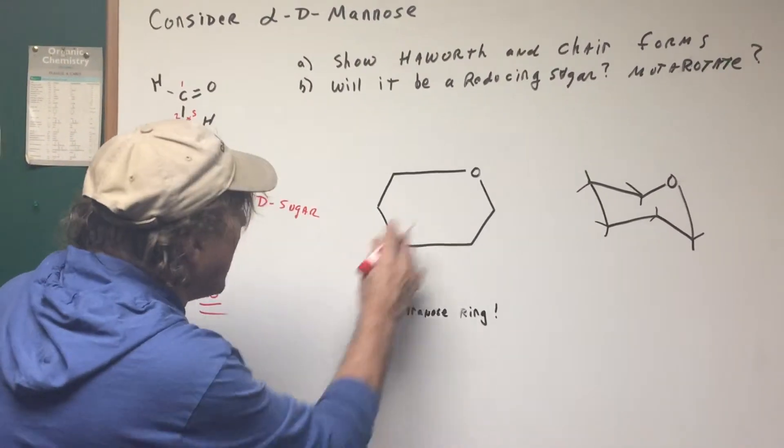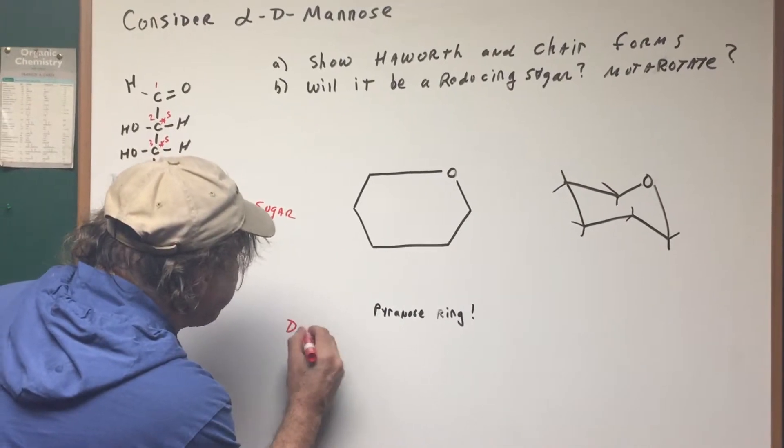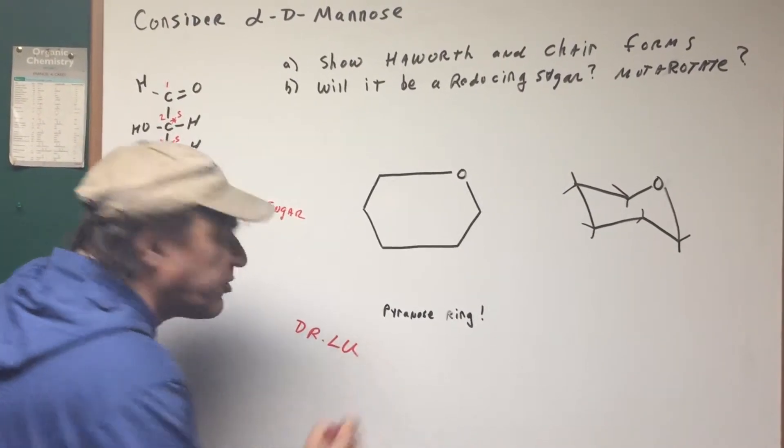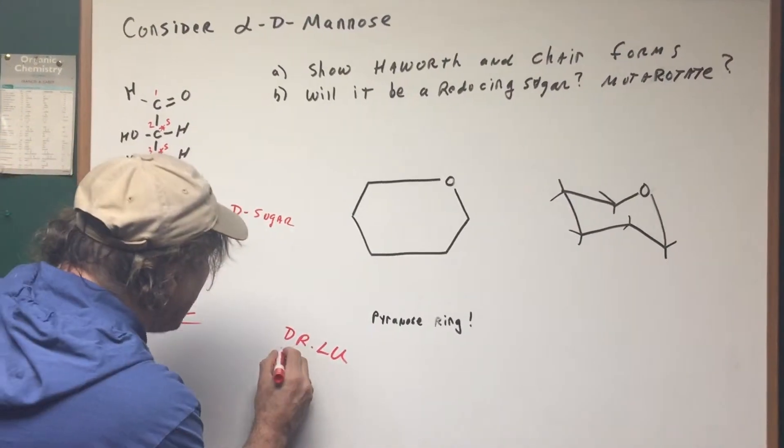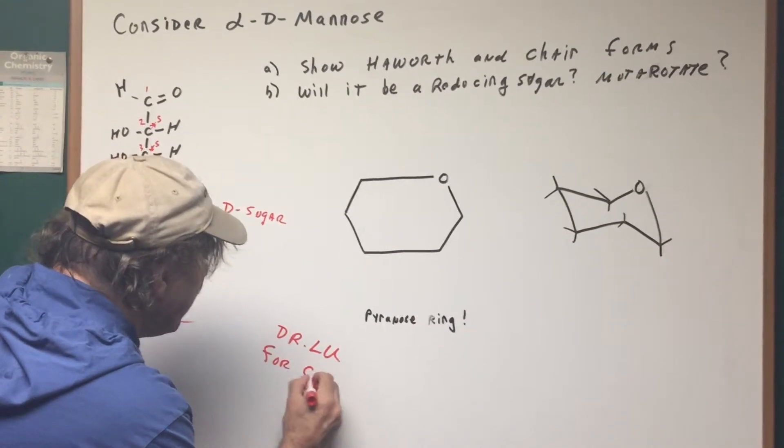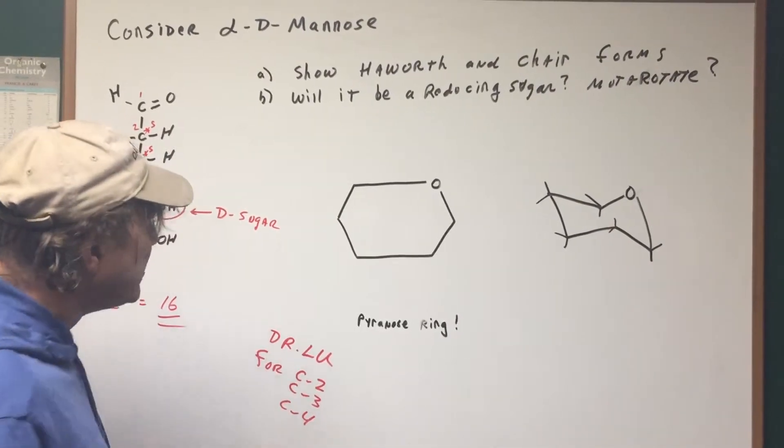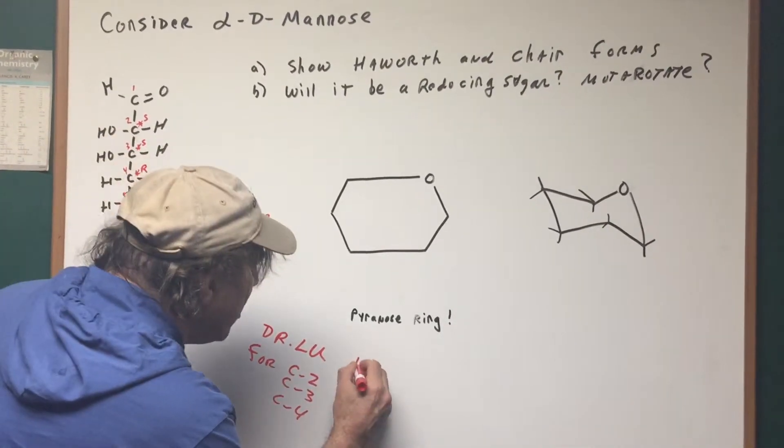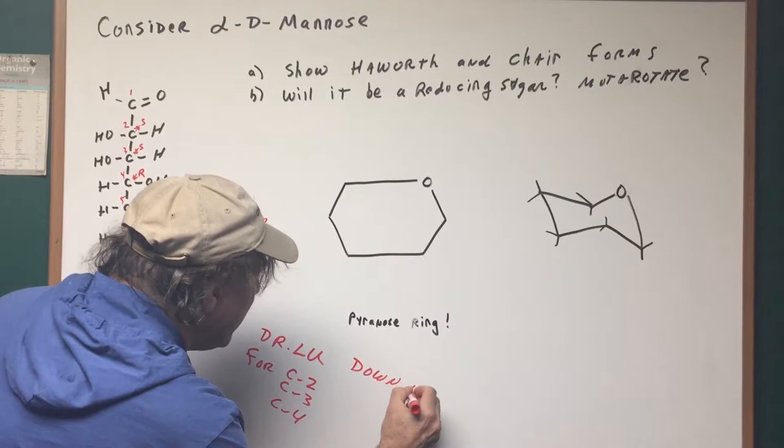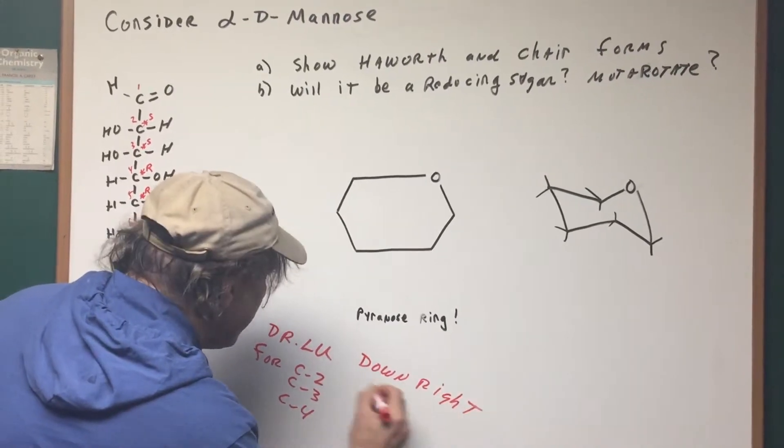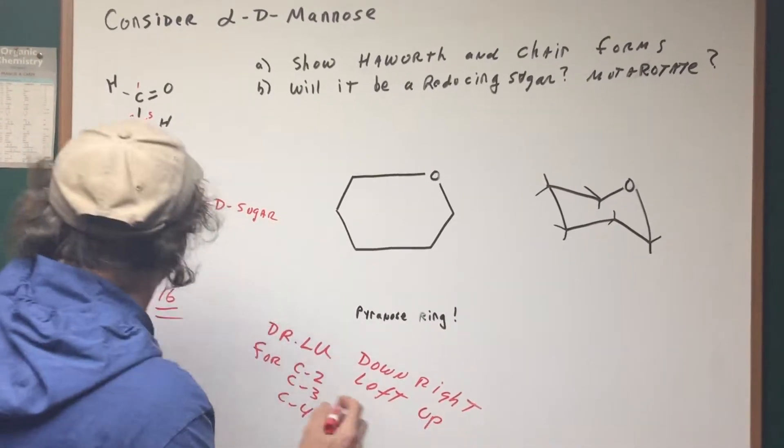What I do is to build this, I use a little trick called Dr. Lou. Now Dr. Lou is going to be a trick for carbons two, carbons three, and carbons four. What does Dr. Lou mean? Dr. Lou means down is to the right and left is up.